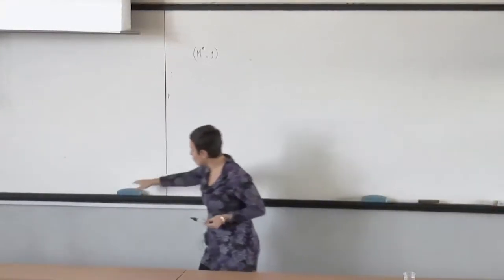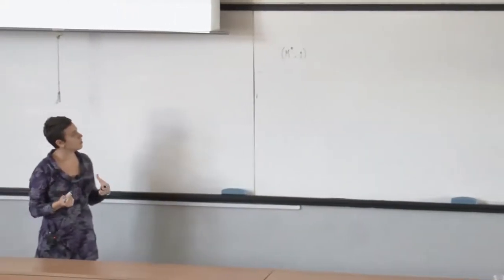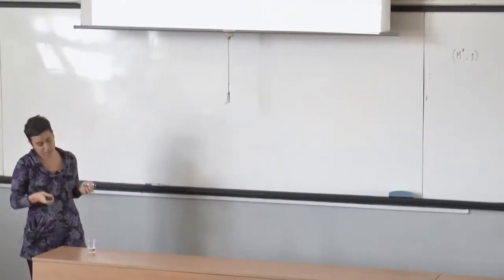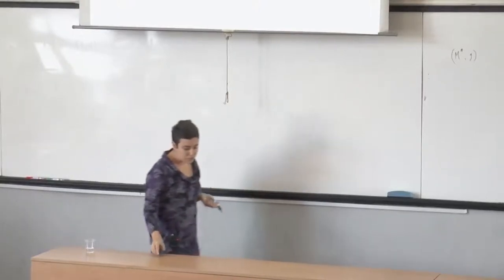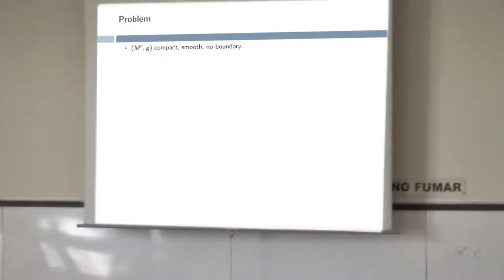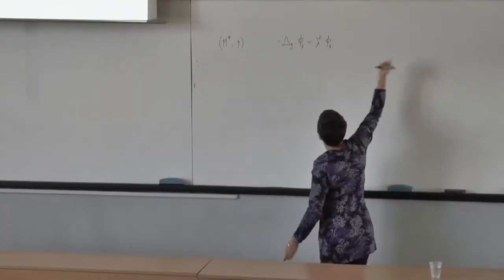On the L² space over the manifold, you have the Laplacian acting. Since the manifold is compact, the Laplacian has discrete spectrum, and it can only accumulate at infinity. The notation I'm going to use: the eigenfunctions are denoted by φ_λ, and the eigenvalues are λ². This is a discrete sequence of eigenvalues accumulating at infinity — in reality these are λ_j's, but I'm going to omit the index.